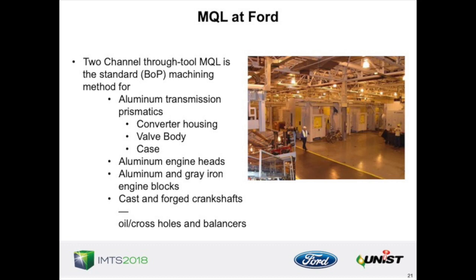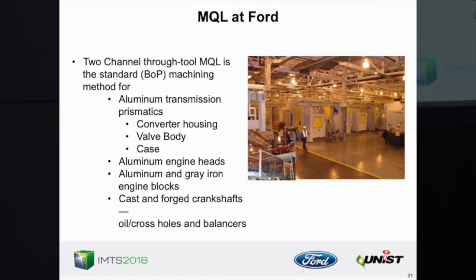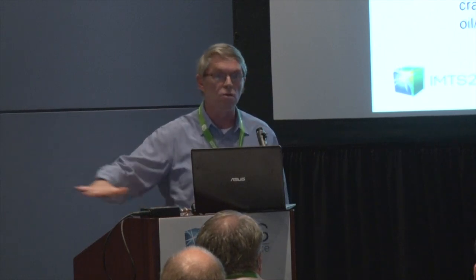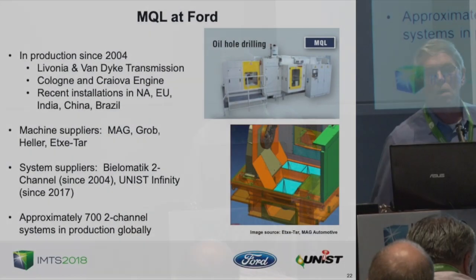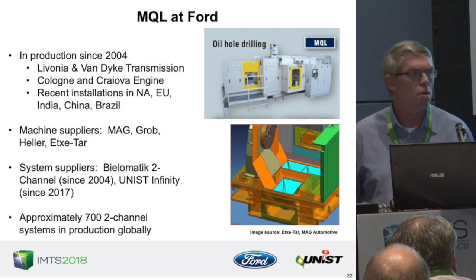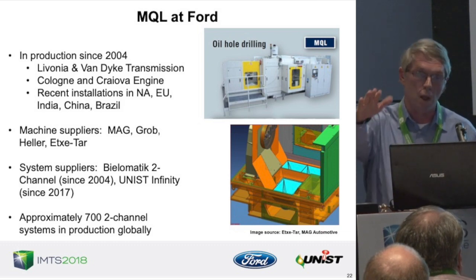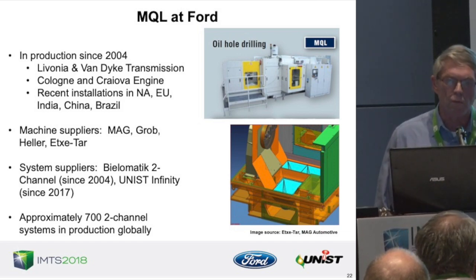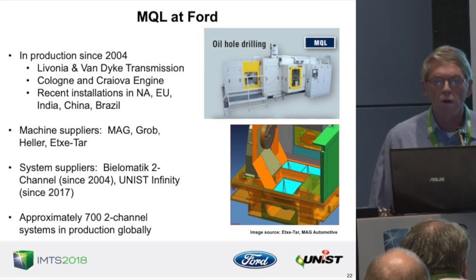That covers a big bulk of Ford's in-house machining. The only things not on MQL are some gears and CGI compacted graphite iron diesel blocks. All new equipment is MQL, though many legacy wet systems remain. Ford has been in production with MQL since 2004 — Livonia and Van Dyke Transmission were among the first, with early engine launches in Cologne and Craiova in Europe. Main machine suppliers are MAG, Grob, and Heller for CNCs; Emco Maier for lathes for cranks. Belematic has been the main MQL system supplier since 2004, with UNIST recently qualified.